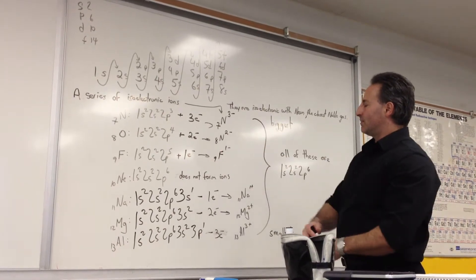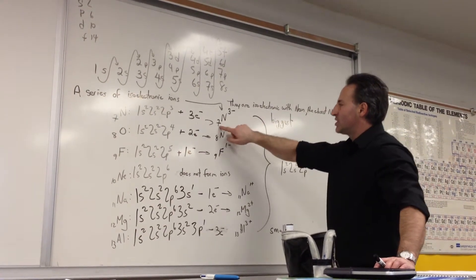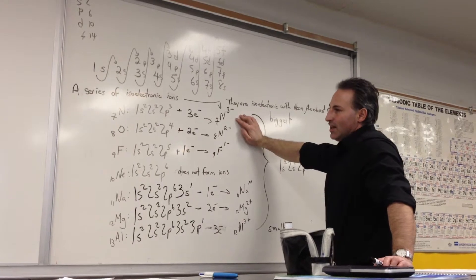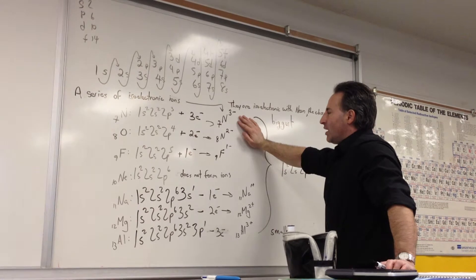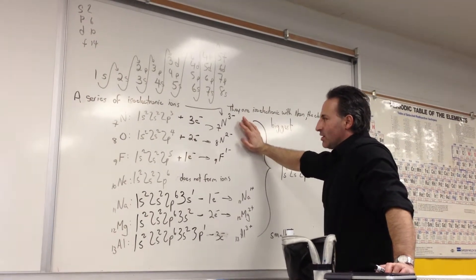So there are 10 electrons here being held by 13 protons, whereas nitrogen on the other side of the scale has only seven protons hanging on to 10 electrons. So what kind of prediction do you think we can make regarding the size of these ions?